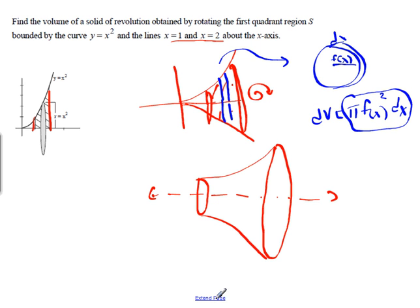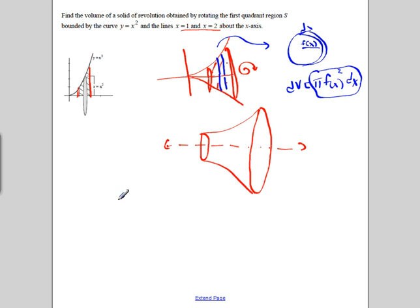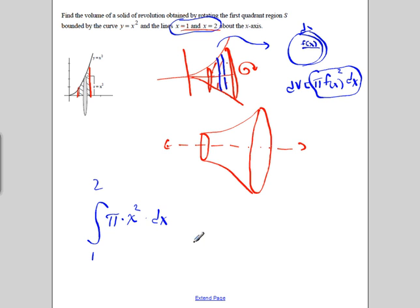To find the volume, just like we were doing with cross sections, we're going to add up from x equals 1 to 2. We're going to add up all these little infinitely small disks. So we've got pi times f of x, which is x squared, dx. There is our volume — expressed as an integral.